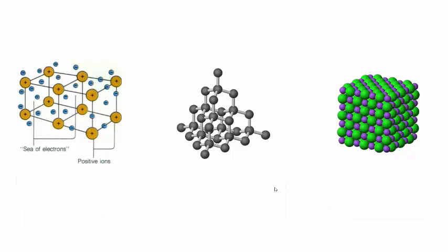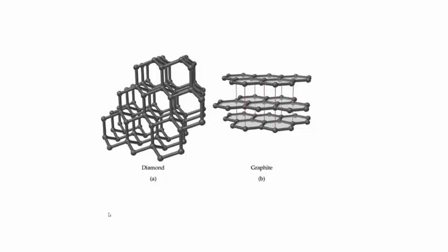However, there are a few exceptions to this. The first exception I want to tell you about is a covalent compound which actually is a good conductor, and that is graphite.